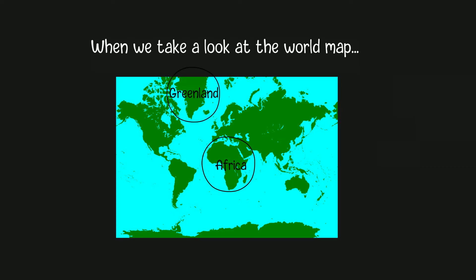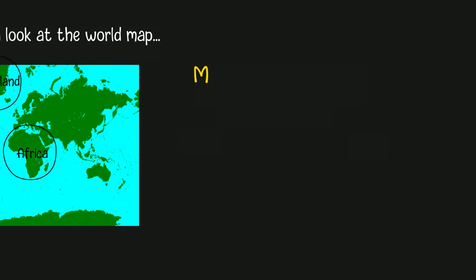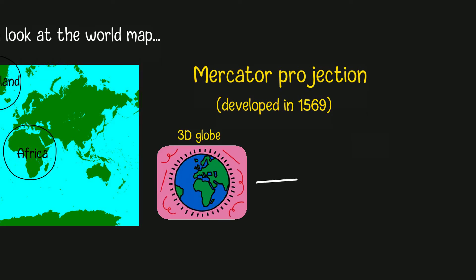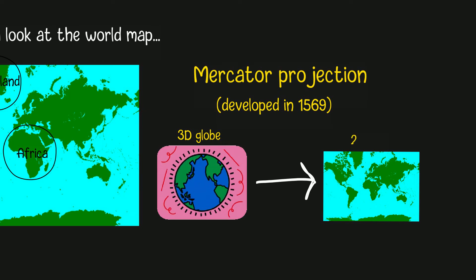The reason behind this is because the world map you are probably familiar with is using a projection method called the Mercator Projection, which was developed all the way back in 1569. It is used to convert the 3D globe into a flat map which is commonly used today.